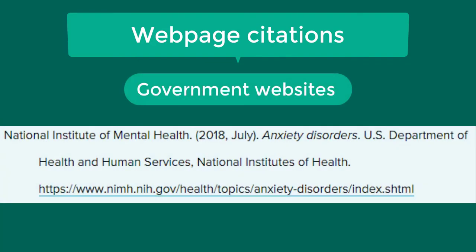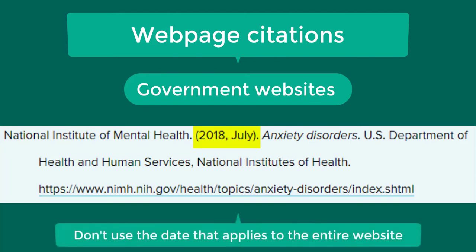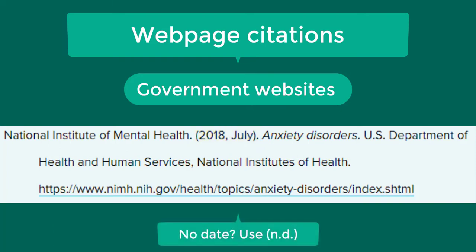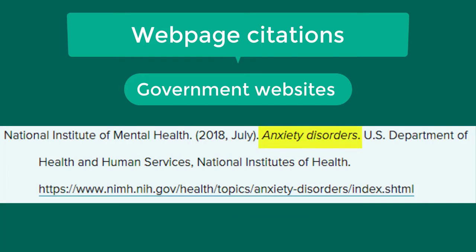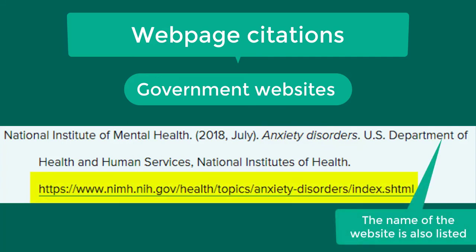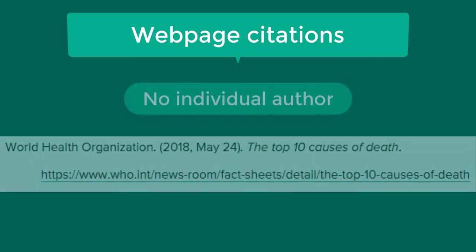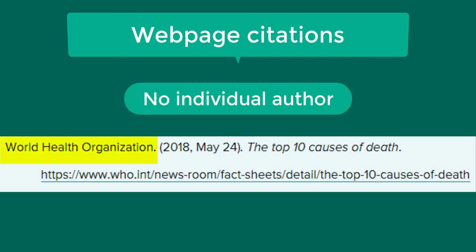If there is no individual author, use the agency responsible for the webpage as the author. Provide a date for the webpage if possible — you should look for a date that pertains to the specific content you are citing rather than the website as a whole. If there is no date listed, use the abbreviation N.D. for no date. Then italicize the title of the webpage and end the reference with the URL. Follow a similar format when citing a non-government website where the organization is the author. In this case, you don't need to include the site name after the title of the webpage in order to avoid repetition.